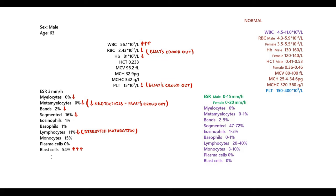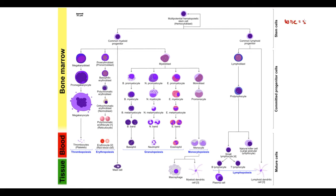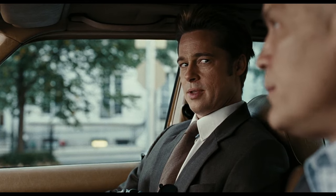When looking at blood analysis of a patient with acute leukemia, the major finding is the presence of blast cells. To confirm the diagnosis, bone marrow aspiration is performed to determine whether blasts exceed 20 percent. For example, if the white blood cell count is 56 and 54 percent are blasts, bone marrow aspiration will confirm the diagnosis. However, we must differentiate between acute myeloid leukemia and acute lymphoblastic leukemia, as blood analysis and bone marrow aspiration look the same in both.